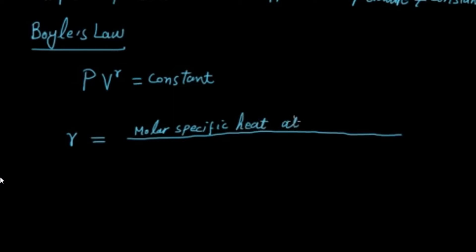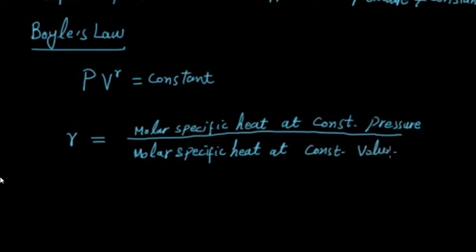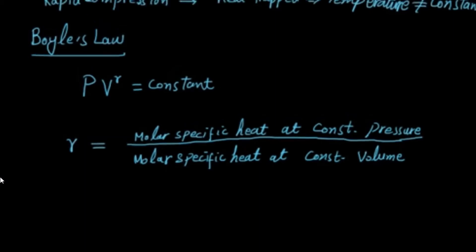Gamma is the ratio of the amount of heat absorbed at constant pressure when temperature changes by 1 Kelvin to that absorbed at constant volume when temperature changes by 1 Kelvin. These are definitions from first year. The key point is that gamma accounts for the fact that pressure and volume change because the temperature is not constant — which Newton did not account for.